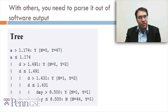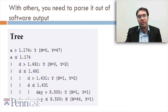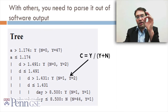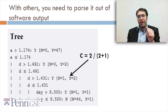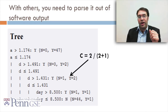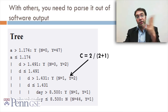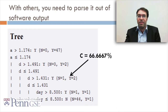Take decision trees like J48. In RapidMiner, it'll show you output that looks like this, and you can actually compute confidences out of it. What you do is take confidence equals yes divided by (yes plus no). In this case, confidence is 2 divided by (2 plus 1), which — applying order of operations — is 66.67%.